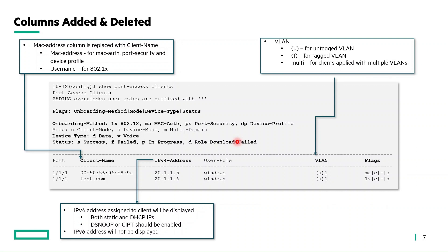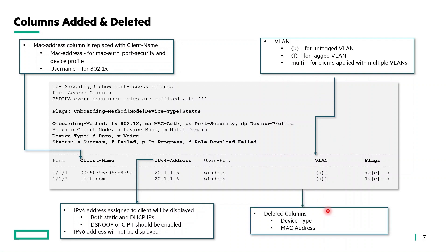The next column added is the VLAN column, which indicates the VLAN assignment for the end client. It uses 'u' for untagged VLAN and 't' for tagged VLAN. In case of multiple VLAN assignments, it will display 'multi'. As for deleted columns, the device type column has been moved as a flag, and the MAC address column has been moved as the client name column.